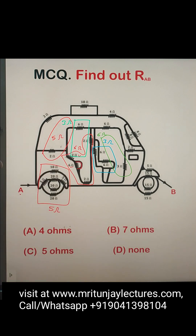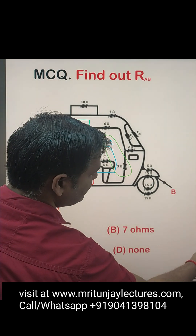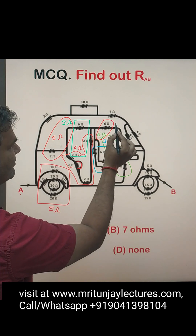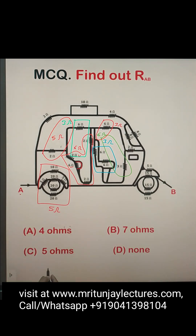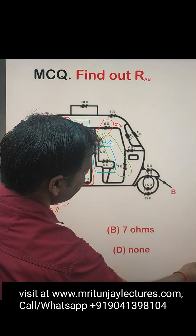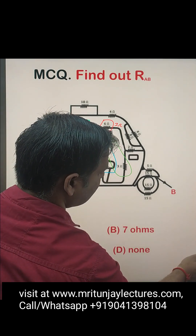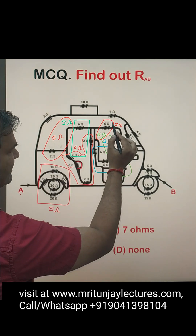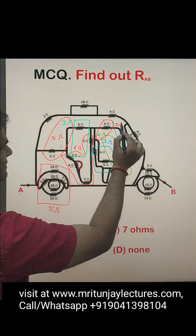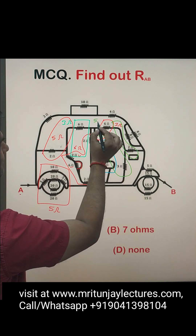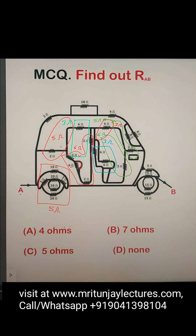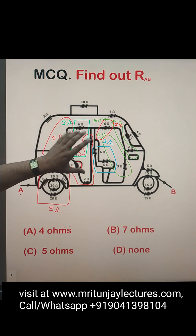Then 6Ω, 6Ω, and 6Ω in parallel — the combination of those two gives 3Ω. Then 3Ω and 2Ω in series gives 5Ω. So the combination of that section is 5Ω.